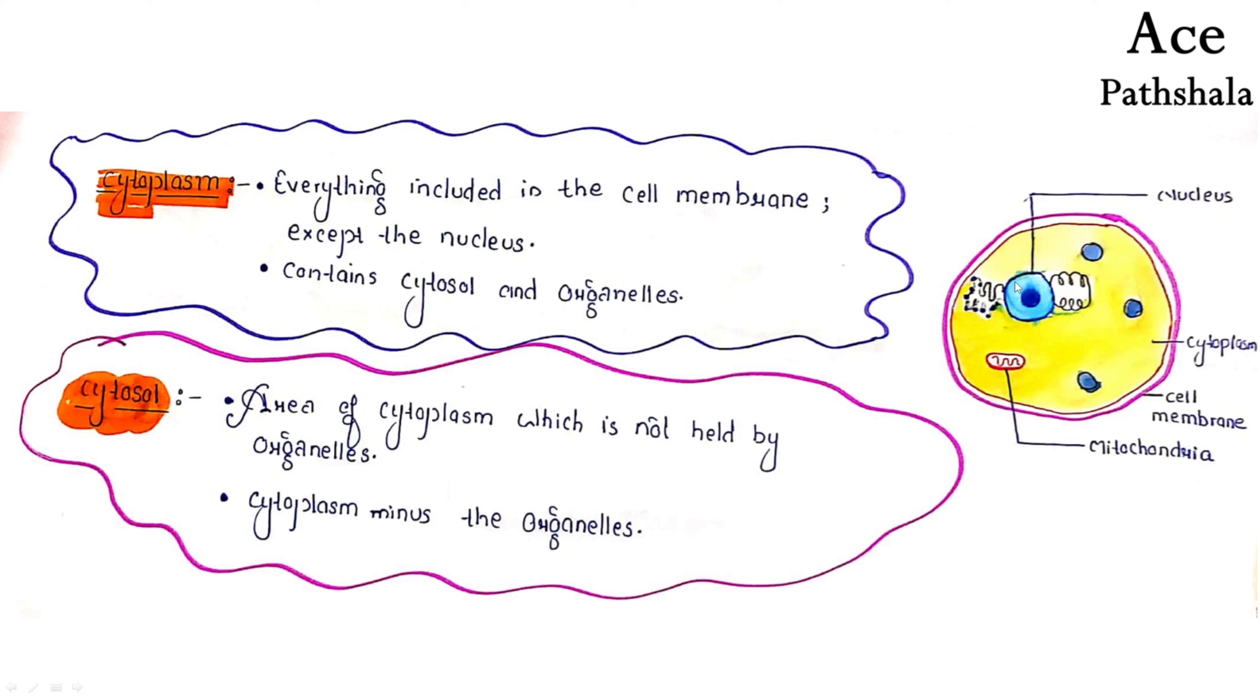If it is a nucleus, then just from the nucleus, the rest of the cell will be cytoplasm. Cytoplasm contains cytosol and organelles. So cytosol plus organelles are the two things present in cytoplasm.